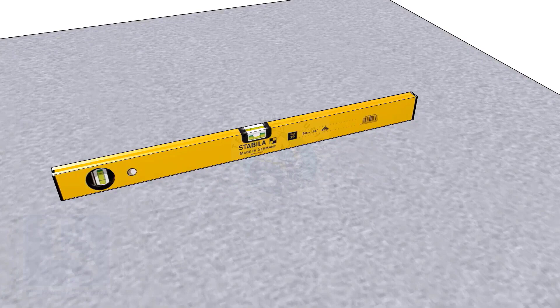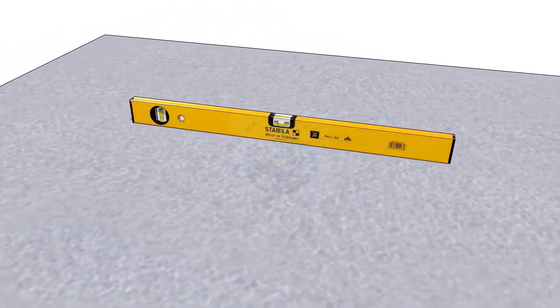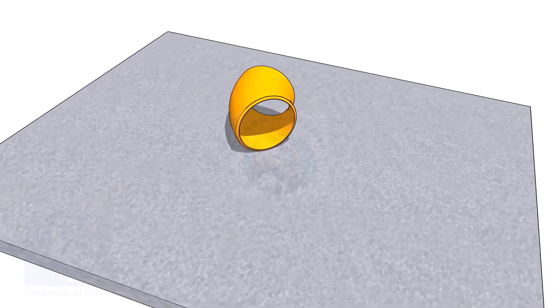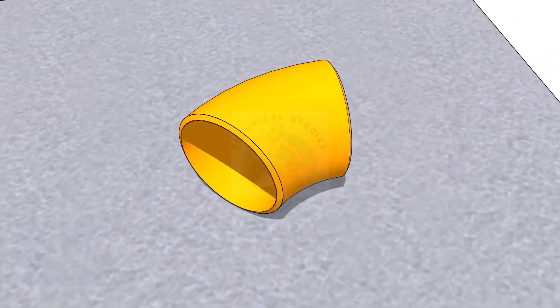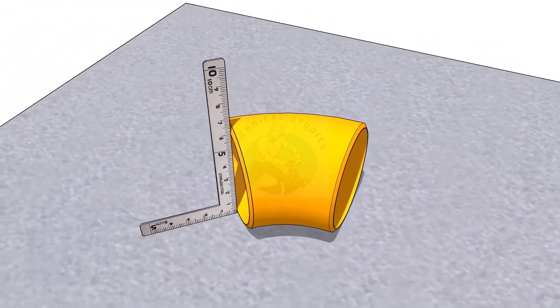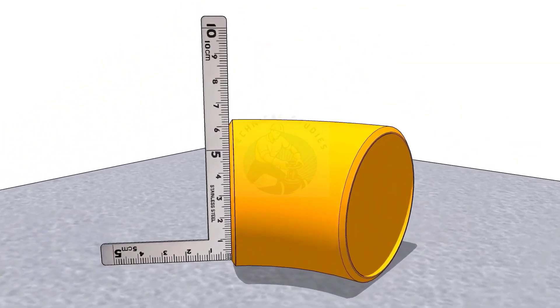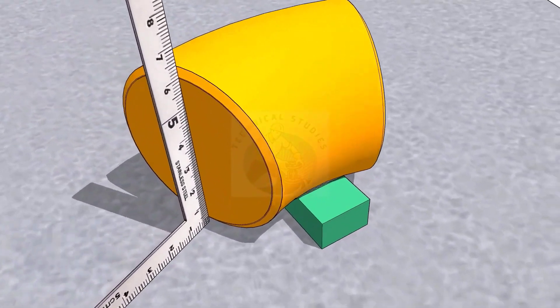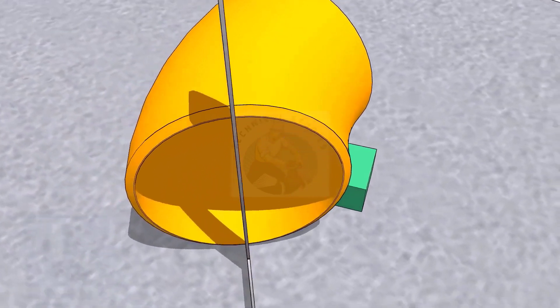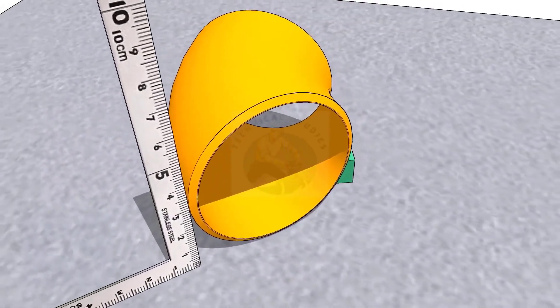Now I will show you how to mark the center line of a 45 degree elbow. Put the elbow on a straight plate. Rotate the elbow until the face of the elbow is exactly square to the plate. Check on both ends.